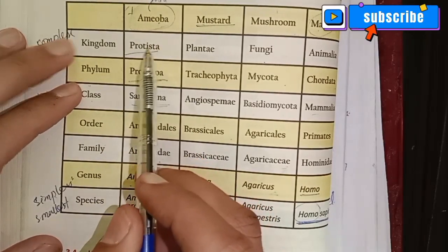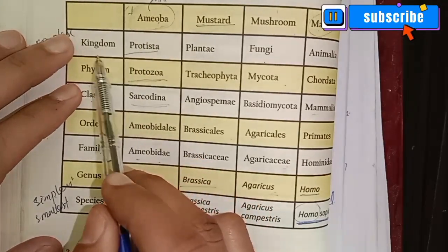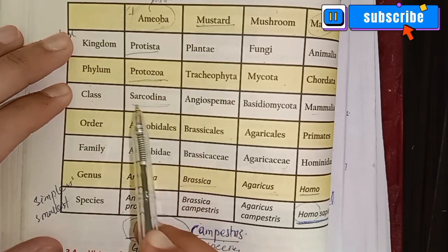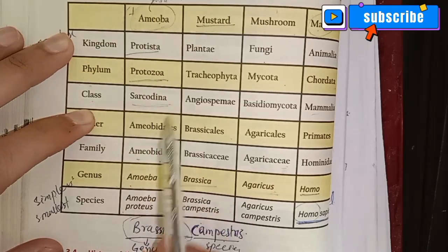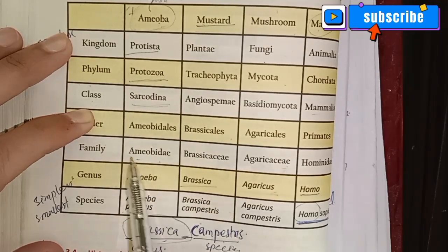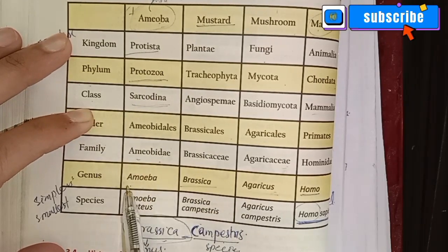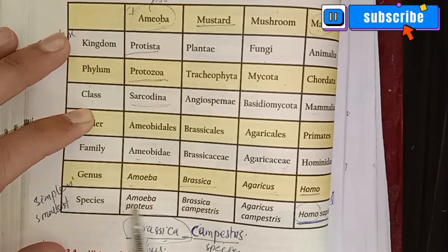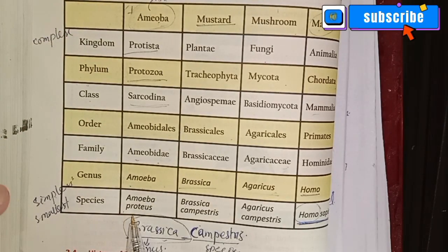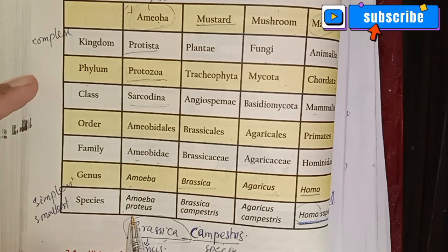To repeat: Amoeba — kingdom Protista, phylum Sarcodina, order Amoebida, family Amoebidae, genus Amoeba, species Amoeba proteus. That covers kingdom, phylum, class, order, family, genus, and species for Amoeba.